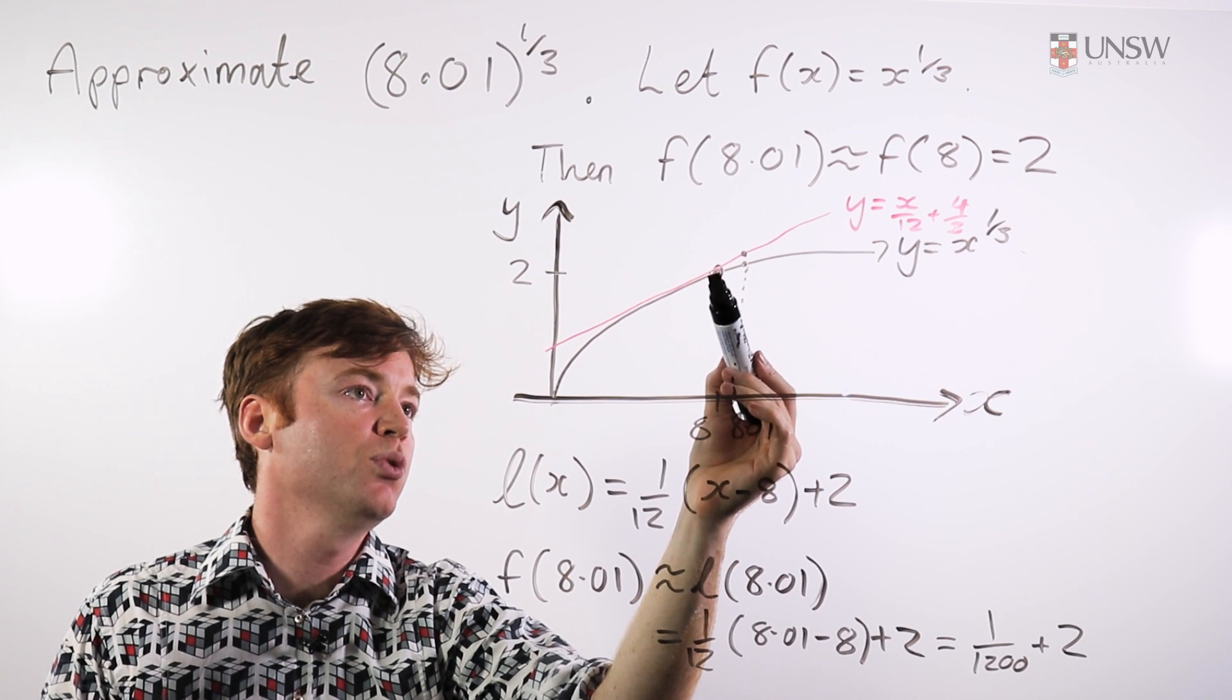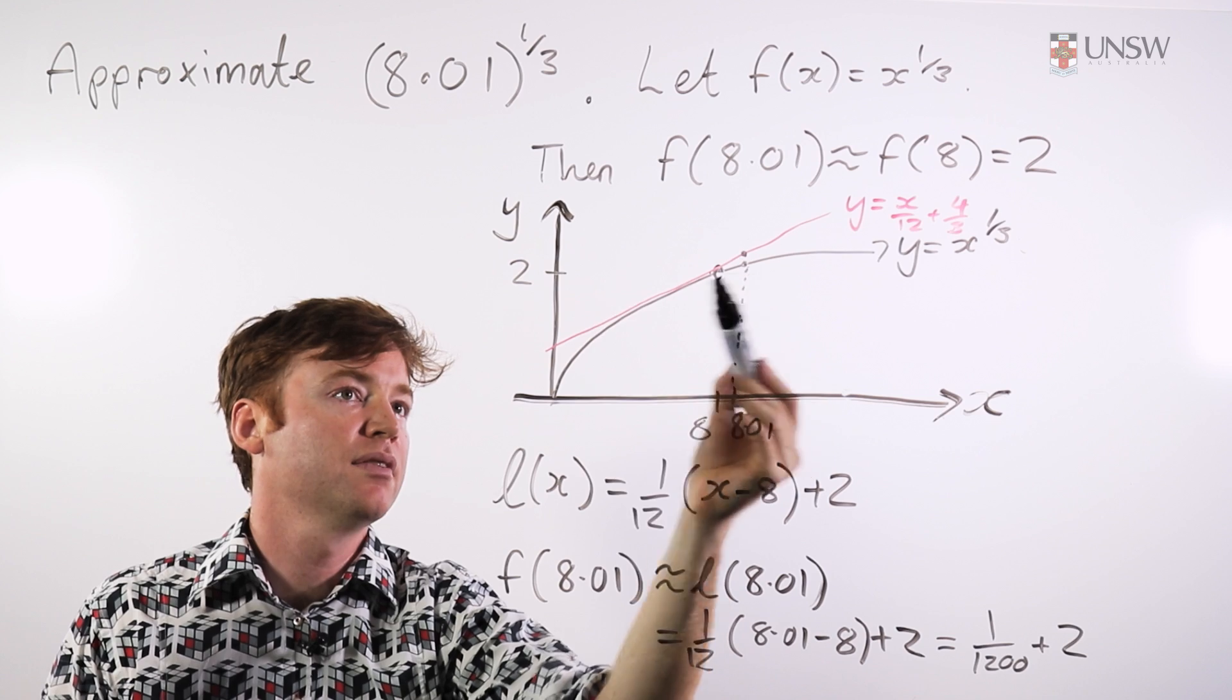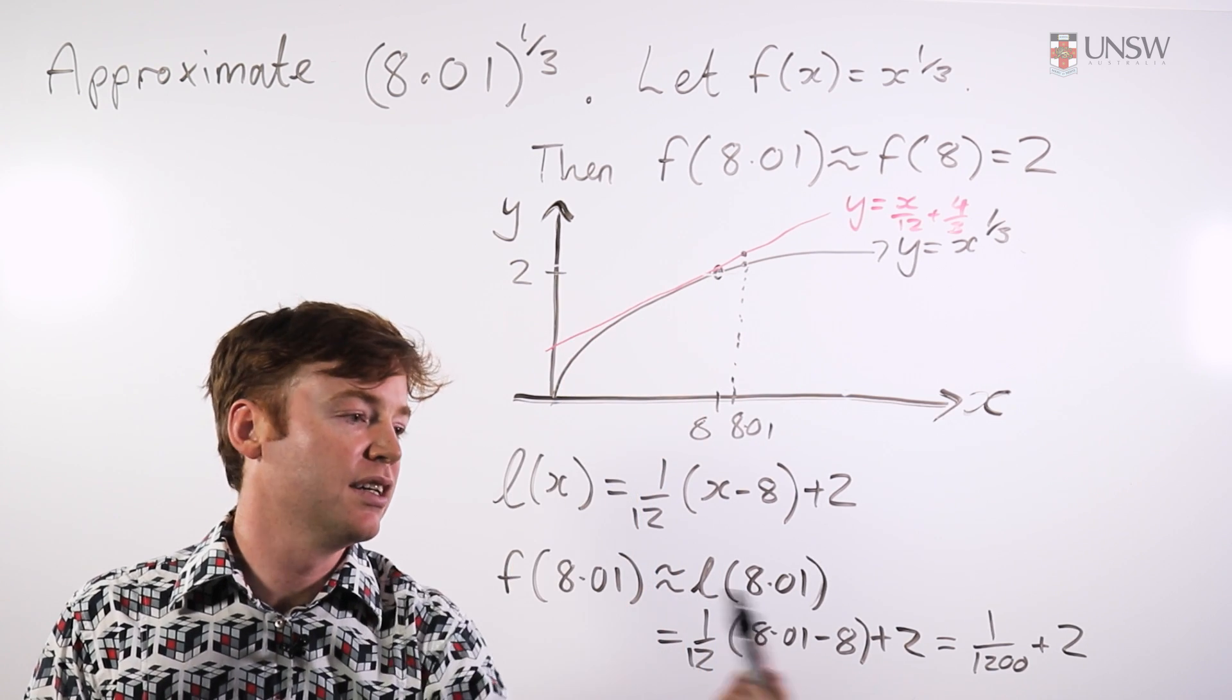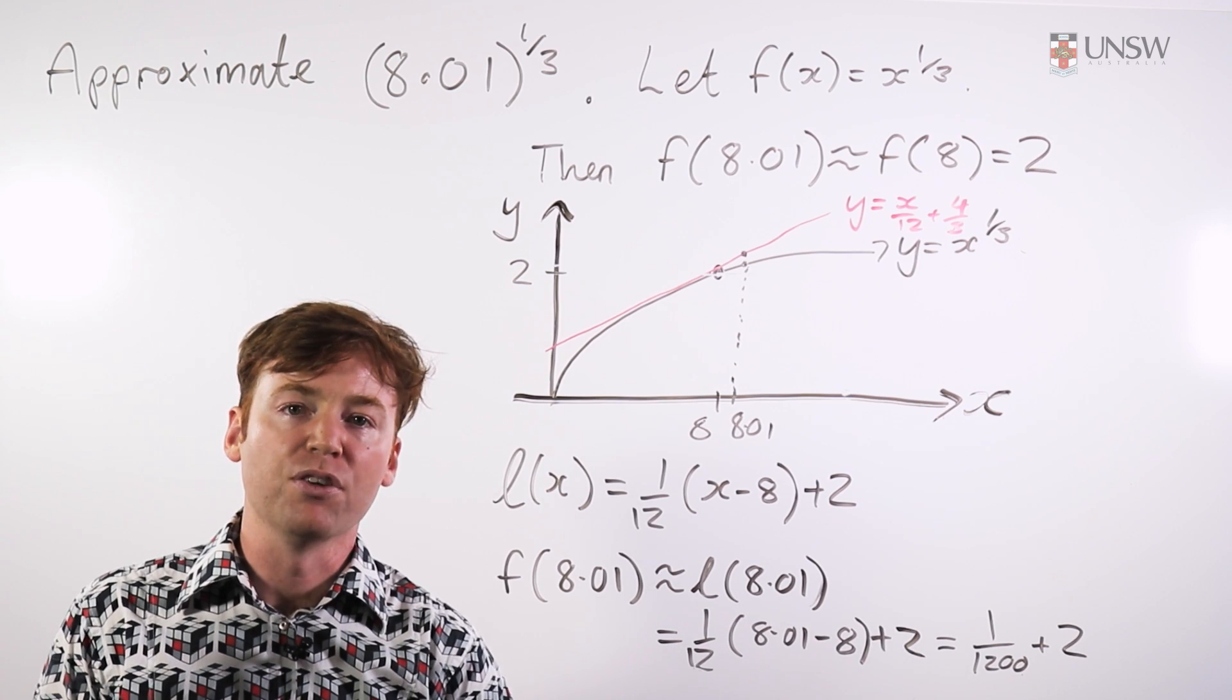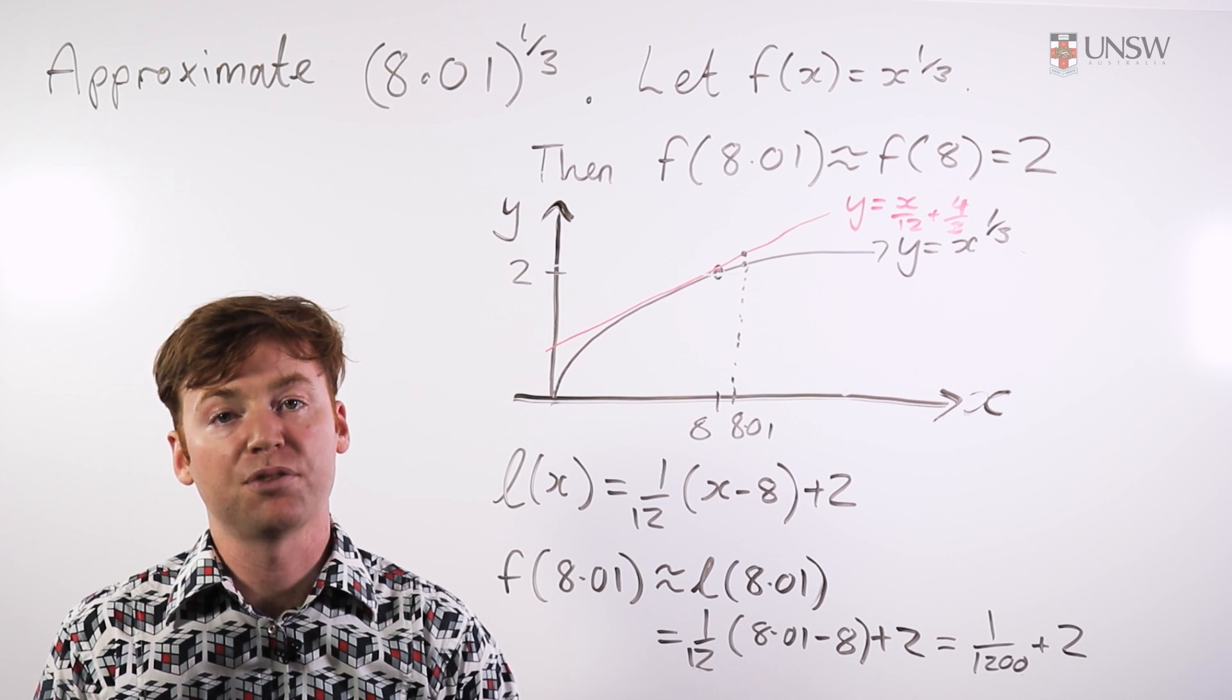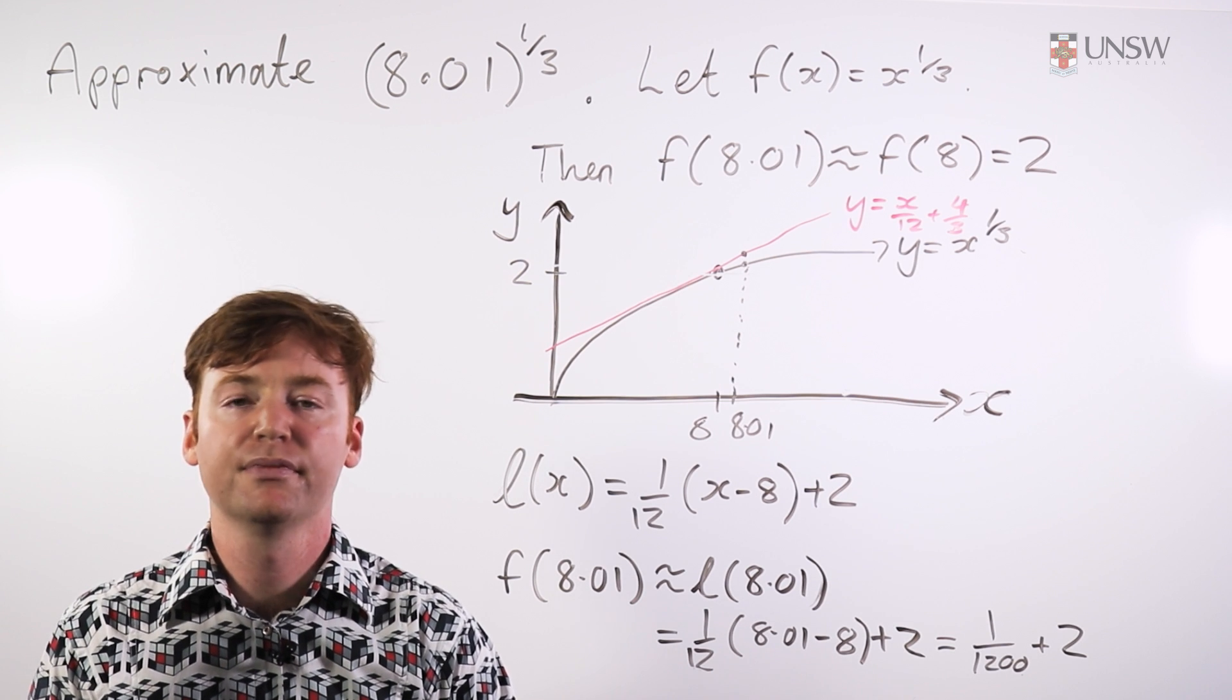Originally we just said it was 2, but now we'll say it's slightly above 2. It's in fact 2 plus 1 over 1200, which is a slightly better approximation to this quantity than just plain old 2. Thank you.